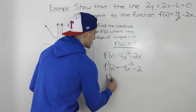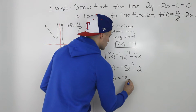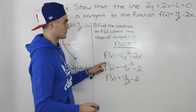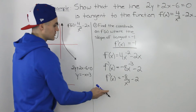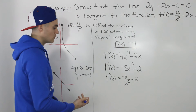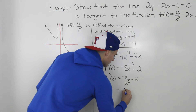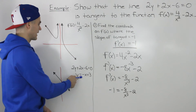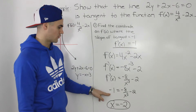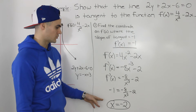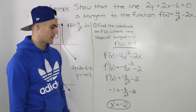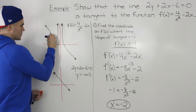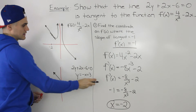We can rewrite this more neatly as negative 8 over x cubed minus 2, which represents the derivative of this function. Now we set the derivative equal to negative 1 and solve for x. Bringing the negative 2 over, negative 1 plus 2 gives us 1, then cross-multiplying gives x cubed equals negative 8, so x equals negative 2. At that x value of negative 2 on the function, the slope of the tangent equals negative 1.